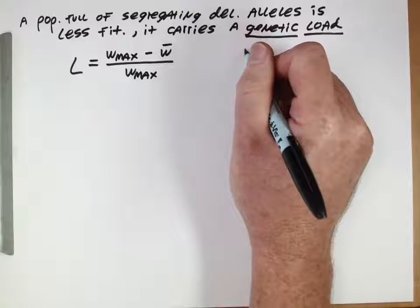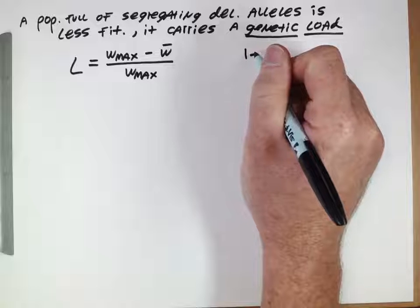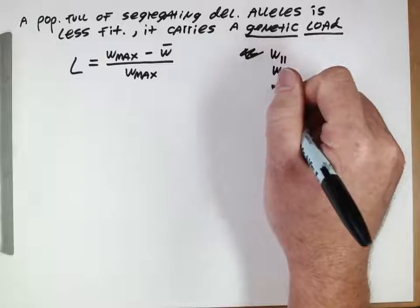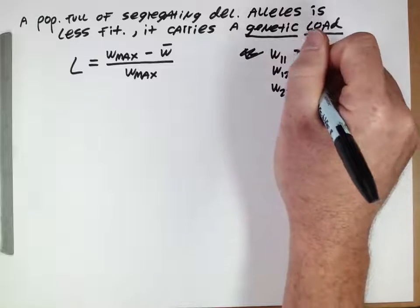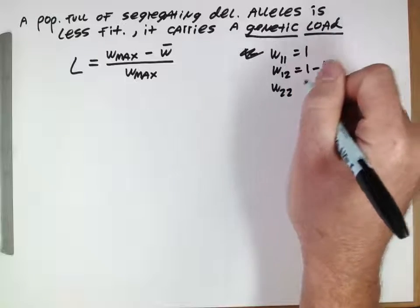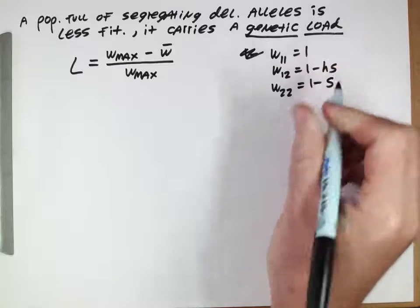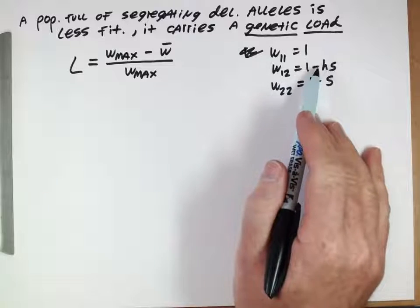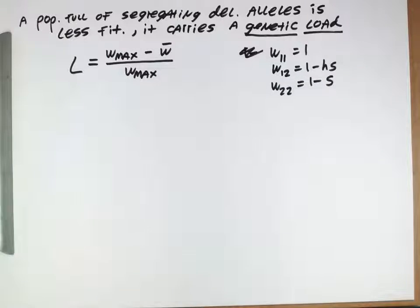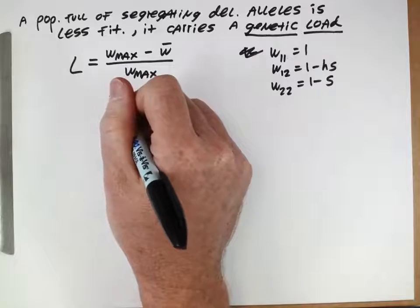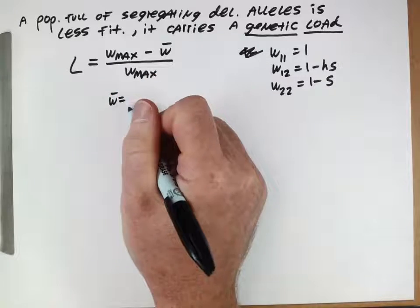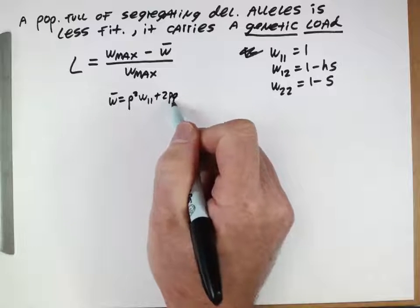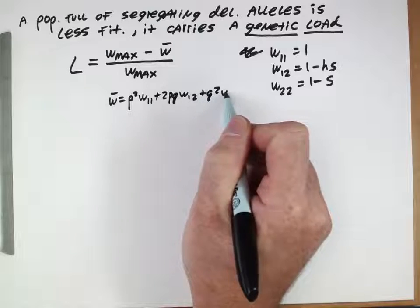Now let's think about for non-recessive deleterious alleles. So let's think of our fitnesses here: w_11 = 1, w_12 = 1 minus hs, w_22 = 1 minus s, where h is not going to equal zero. We can take these fitnesses, plug them in there, and we can actually solve for what this genetic load is. The only hard part of this is calculating the mean fitness. So the mean fitness, remember, is p squared w_11 plus 2pq w_12 plus q squared w_22.